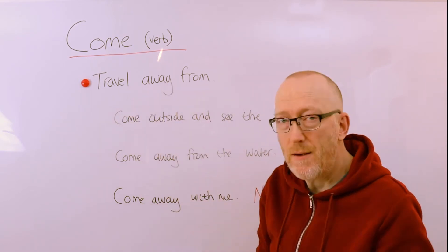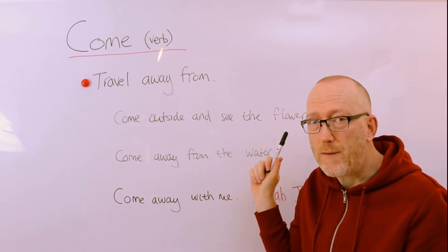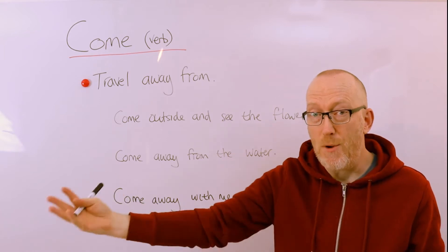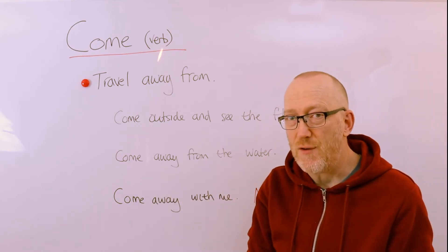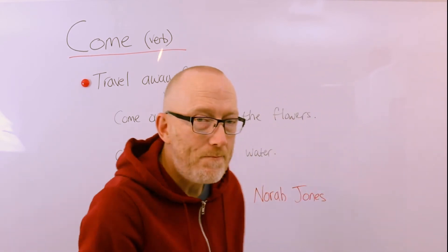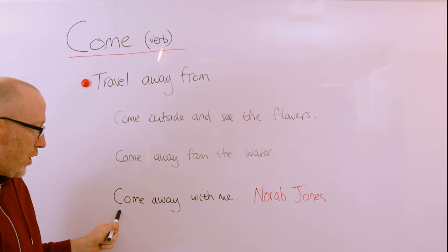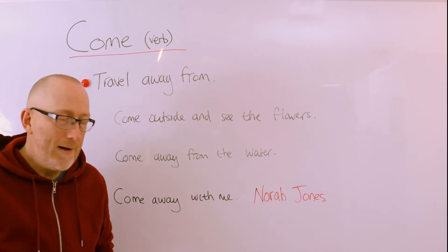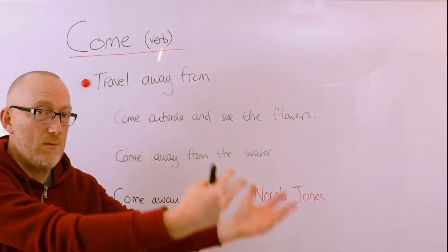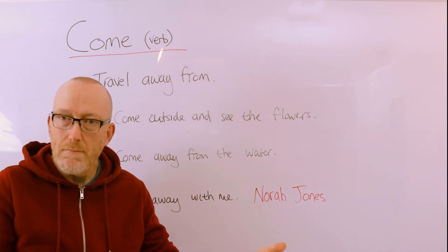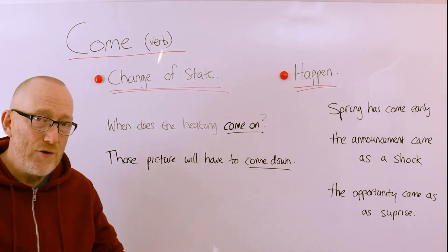So traveling away from something, even with somebody else as well. For example, come outside and see the flowers. So you are in the house, I want you to come outside, move away from the house. You might say to your children, come away from the water, it's dangerous. So move away from the water. Nora Jones, some of you may know Nora Jones, I think she's a famous American singer, she sang a song which was called come away with me. And I think the song is all about Nora singing or asking somebody to leave where they are and go somewhere else, so travel away from a place where you are.